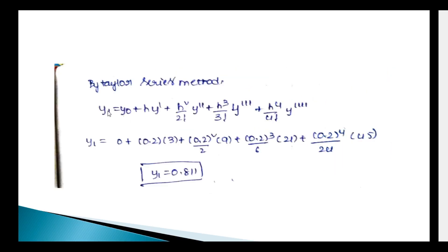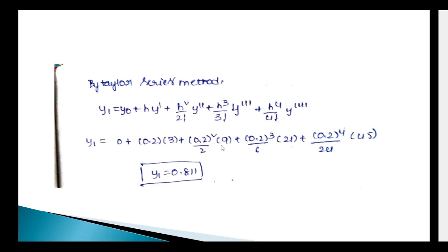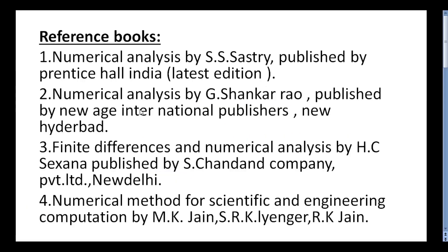Substituting into the Taylor series formula: y₁ = y₀ + h·y₀' + (h²/2!)·y₀'' + (h³/3!)·y₀''' + (h⁴/4!)·y₀''''. So y₁ = 0 + 0.2×3 + (0.2²/2)×9 + (0.2³/6)×21 + (0.2⁴/24)×45. Solving, y₁ = 0.811. This is the value of y at x = 0.2. If you have any doubts, refer to these books. Thank you.